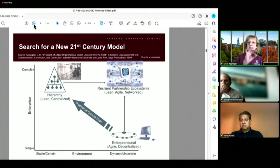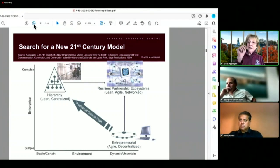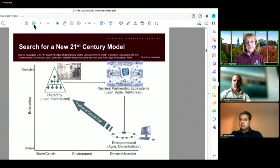By the mid-80s, I was starting to work on this idea of resilient partnership ecosystems that are connected by networks to be lean, agile, and networked, and published my first paper in that area in the late 1990s.